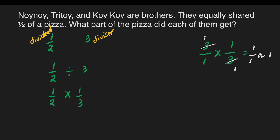Now we can proceed to multiplication. 1 times 1 is equal to 1, and 2 times 3 is equal to 6. Is 1/6 already in lowest terms? Yes. So our final answer is 1/6. It means each of these boys gets 1/6 of the pizza.